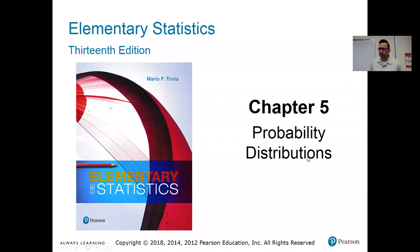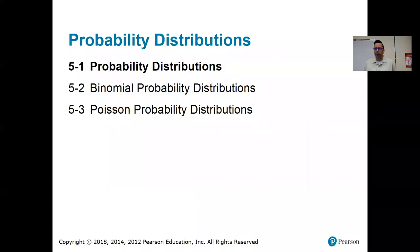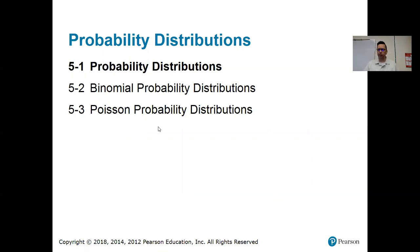Hi everybody, it's Professor Mitchell. Today we're starting chapter five, which is more about probability. In this chapter, we're going to do an introduction to probability distributions — that's what we're doing today. After that we'll talk about some specific probability distributions, namely the binomial distribution, and then the Poisson probability distribution.